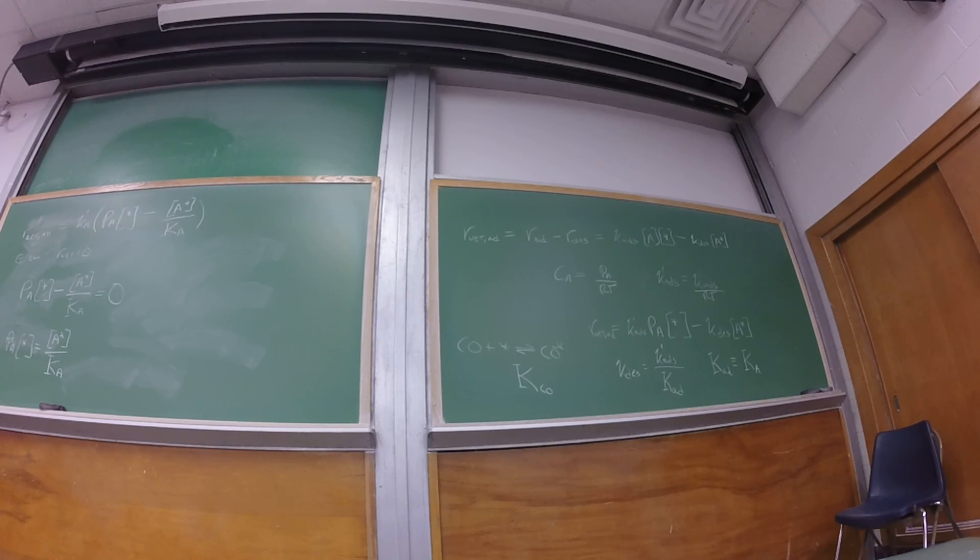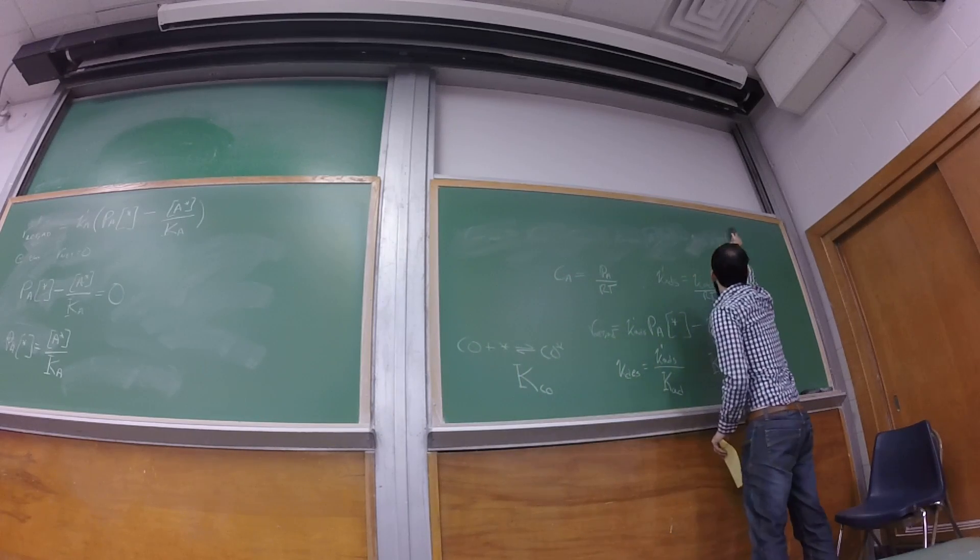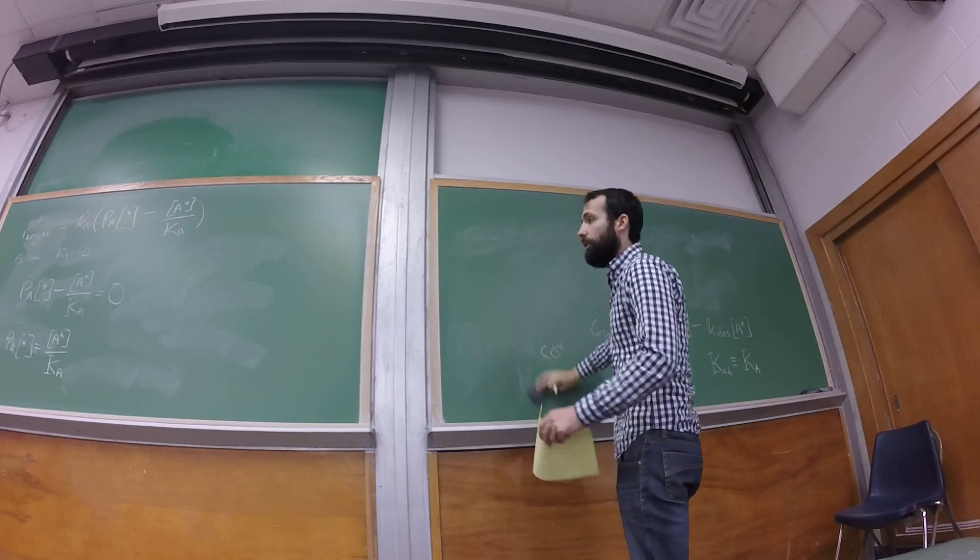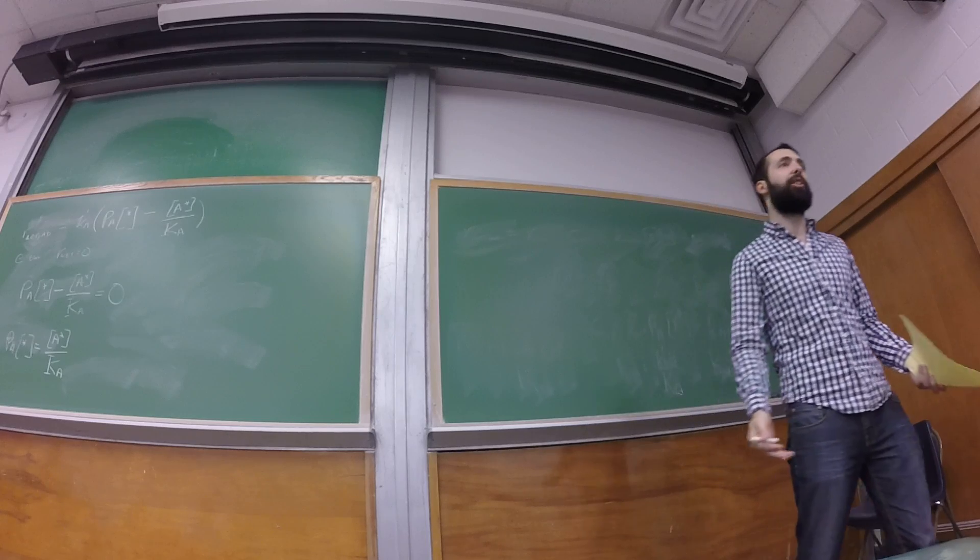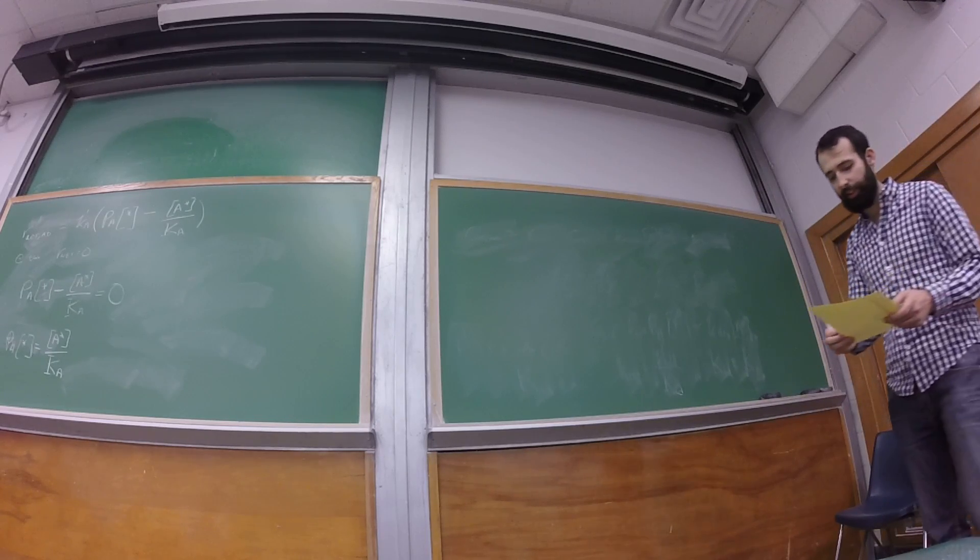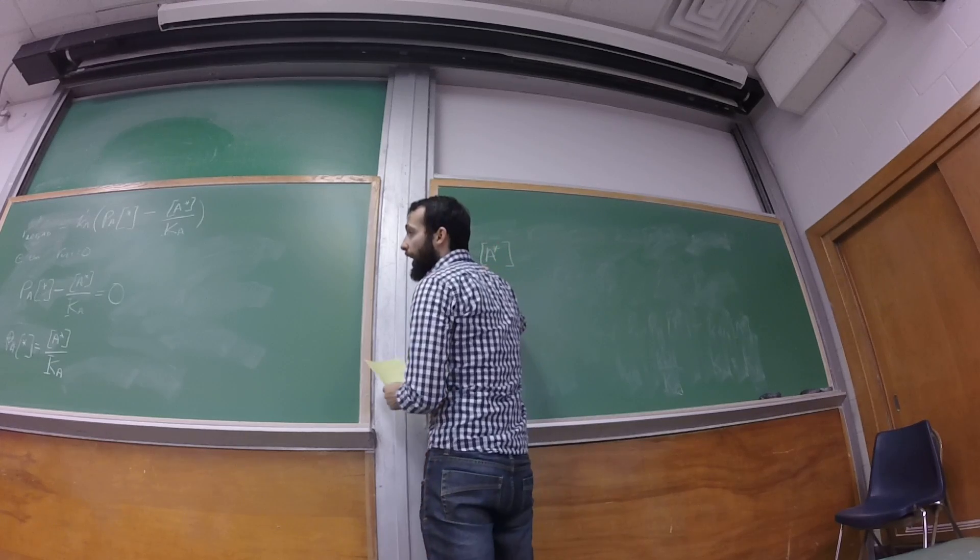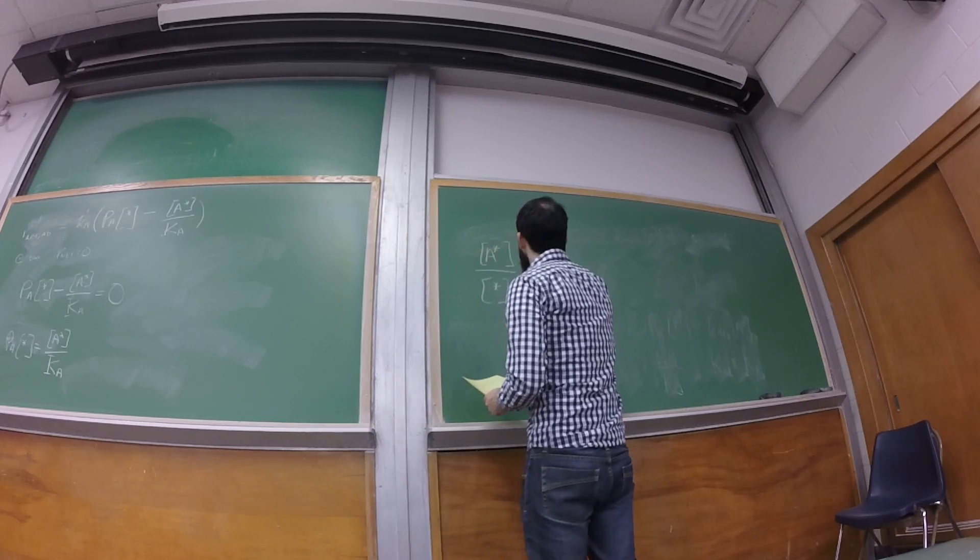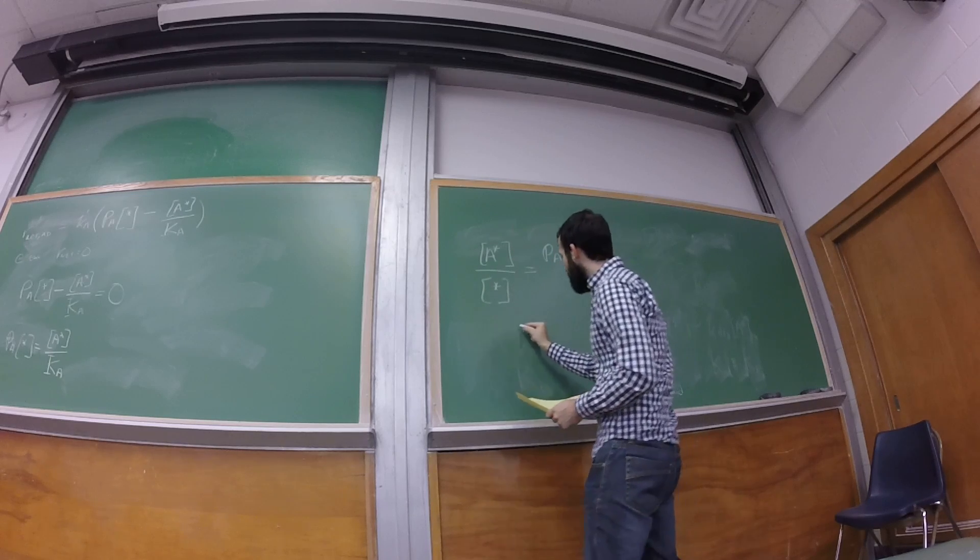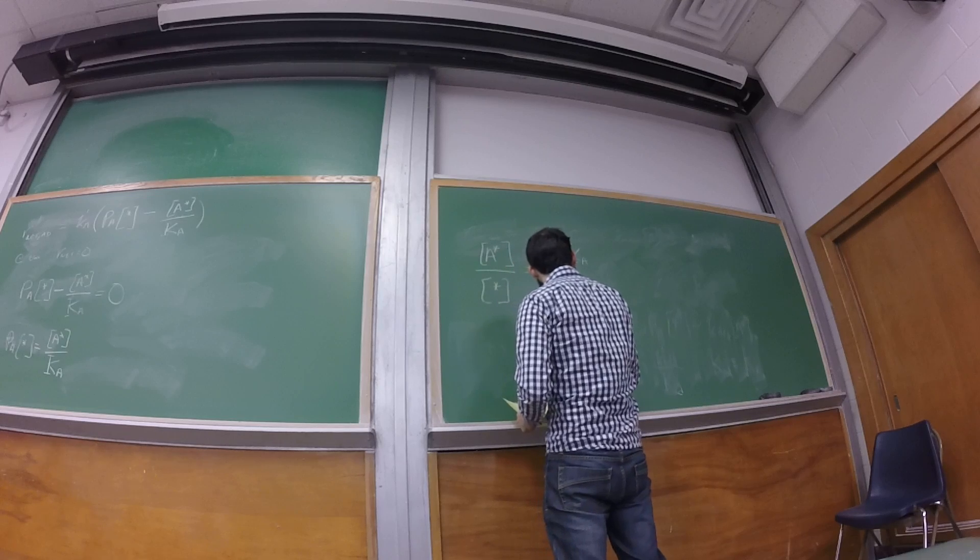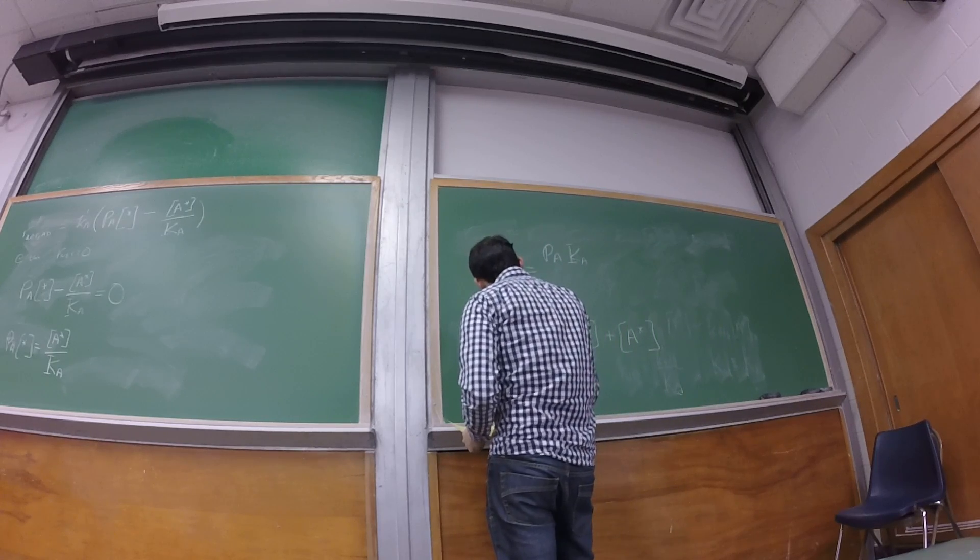Now is this the final form that we want to leave things in? Solve for A star. Maybe. We don't generally want the concentrations of adsorbed species or vacancies in something like an isotherm. I can't measure those things. So instead, what we would write out is A star divided by star total. And now let's use the site balance to eliminate the fraction of vacant sites from the surface.